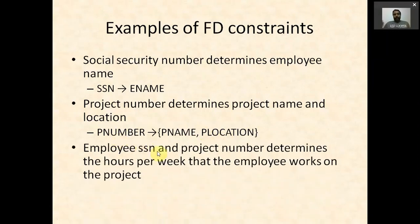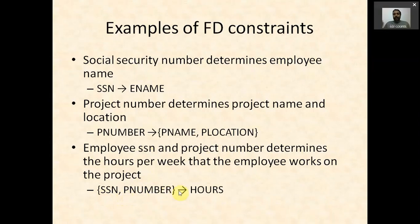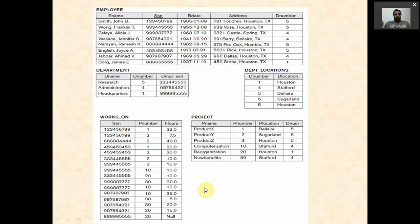Another example: employee SSN and project number together determine the hours per week that the employee works on that project, denoted SSN, PNumber → Hours. Hours is functionally dependent on both SSN and PNumber. This is because hours a particular employee works on a project depends on the social security number and also the project number.